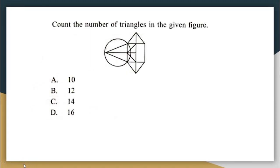Next question: count the number of triangles in the given figure. We will first start by counting all the small triangles, then move on to counting the bigger triangles. This is triangle number 1 — just keep looking at my pointer — triangle number 2, 3, 4, 5, 6, 7, 8, 9, and 10. So there are 10 small triangles.